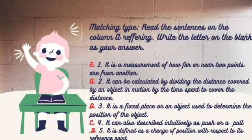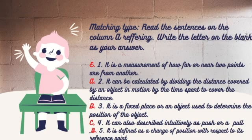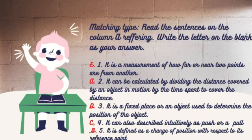The answers: Number 1 is E — Distance. Very good. Number 2 is A — Speed. Very good. Number 3, the correct answer is D — Reference point. Very good. Number 4 is C — Force. Very good. Number 5 is B — Motion. Very good.